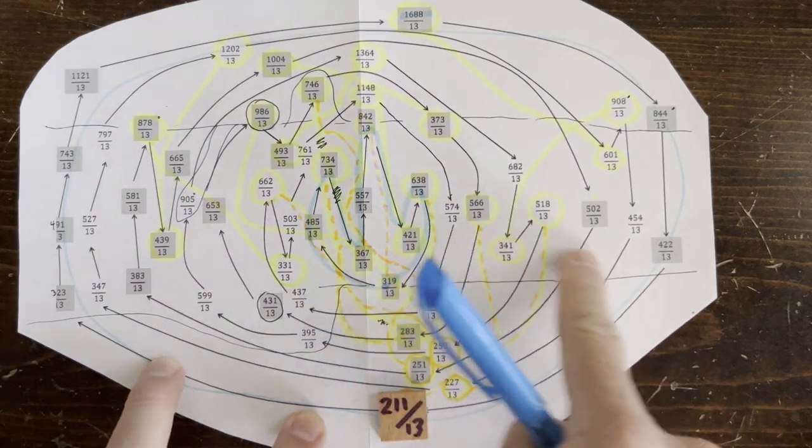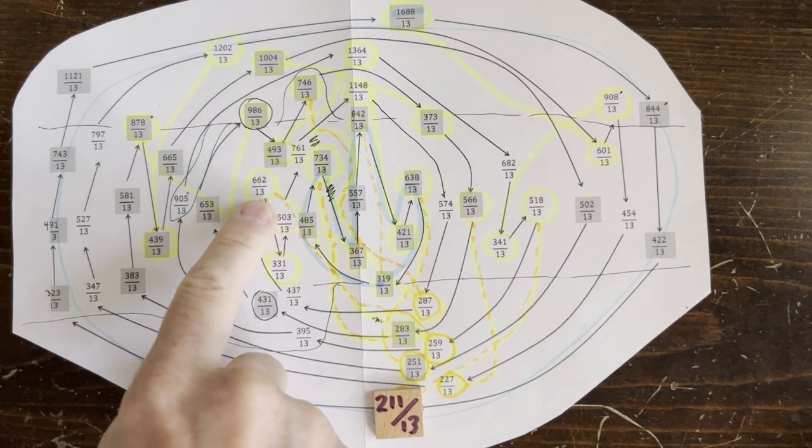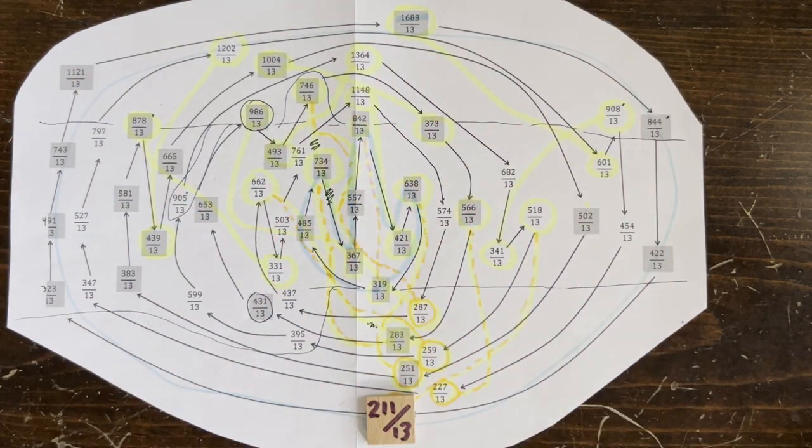In between, though, there's a lot of potential integer loops. Look, 662 over 13, is that an integer? Well, you never know. So in this episode, let's step back and ask two questions.